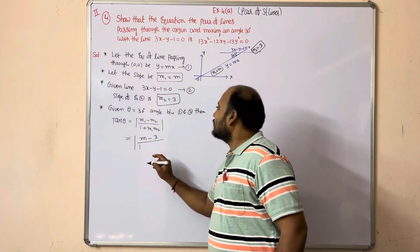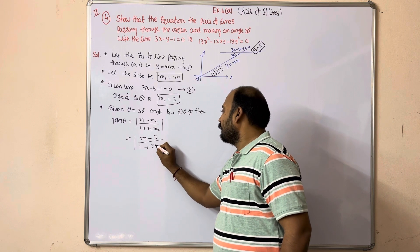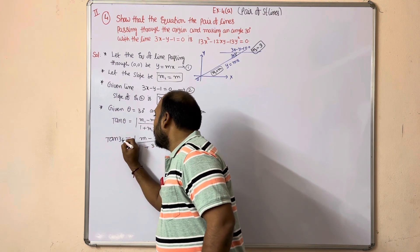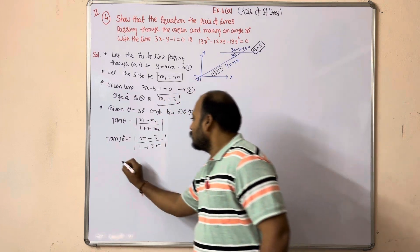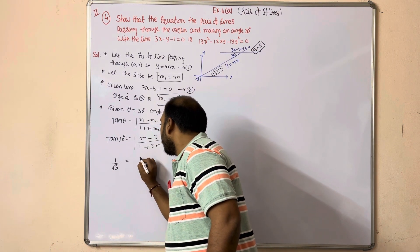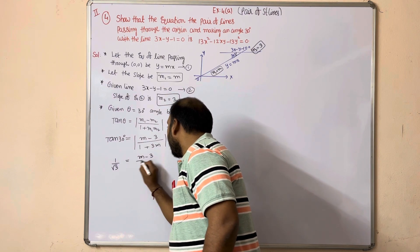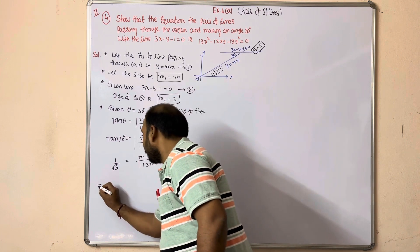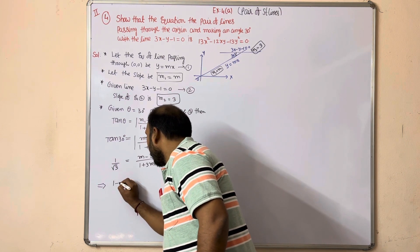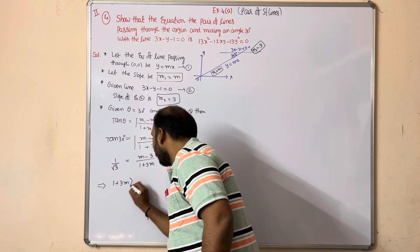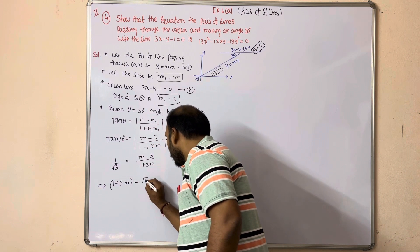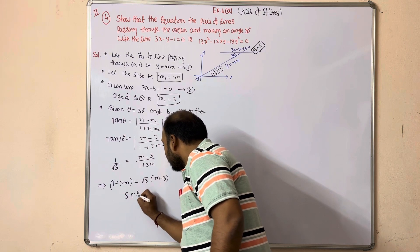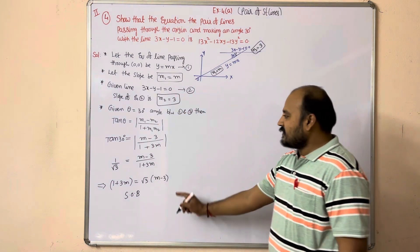So we get: 1 by root 3 equal to (m minus 3) by (1 plus 3m). Cross multiplying: 1 plus 3m equal to root 3 into (m minus 3). Squaring both sides: (1 plus 3m) whole square equal to 3 into (m minus 3) whole square.